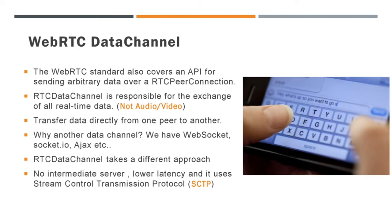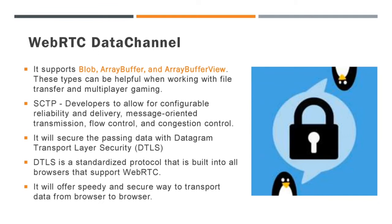It uses the Stream Control Transmission Protocol, SCTP, which allows for asynchronous delivery and retransmit configuration. Coming to the core part of this API, it supports blob, array buffer, and array buffer view formats, which are helpful when working with file transfer and multiplayer gaming. SCTP provides developers with configurable reliability and delivery, message-oriented transmission, flow control, and congestion control. RTC Data Channel secures passing data with Datagram Transport Layer Security, or DTLS, which is a standard protocol built into all browsers that support WebRTC. So in general, RTC Data Channel offers a speedy and secure way to transport data from browser to browser.